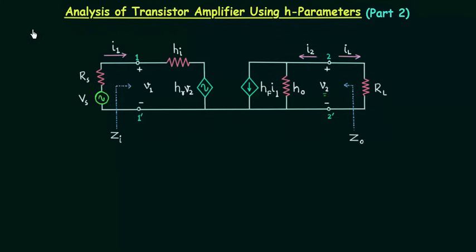In the last lecture we obtained the expressions of current gain, voltage gain and power gain. In this lecture we will find out expressions of input impedance and output impedance. We will start with input impedance.